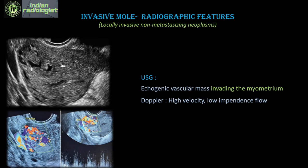Coming to the invasive mole, it is locally invasive. When you see heterogeneous cystic areas, you must ascertain whether it is invading the myometrium. Look for focal myometrial thinning and the margins of the lesion, and confirm that the flow is not invading into the myometrium. There will again be high velocity and low impedance flow. Whenever we come across gestational trophoblastic disease, we have to look for features of myometrial invasion.